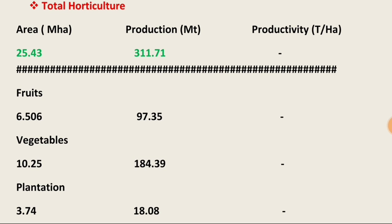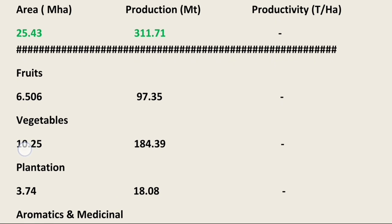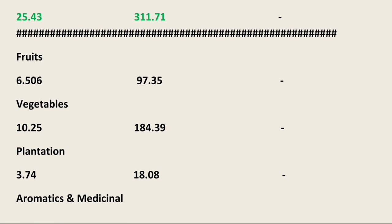Now talking about fruit production: the total area under fruit crops is 6.5 million hectare and total production is 97.35 million ton. In terms of vegetables, the total area covered is 10.25 million hectare and total production is 184.39 million ton.